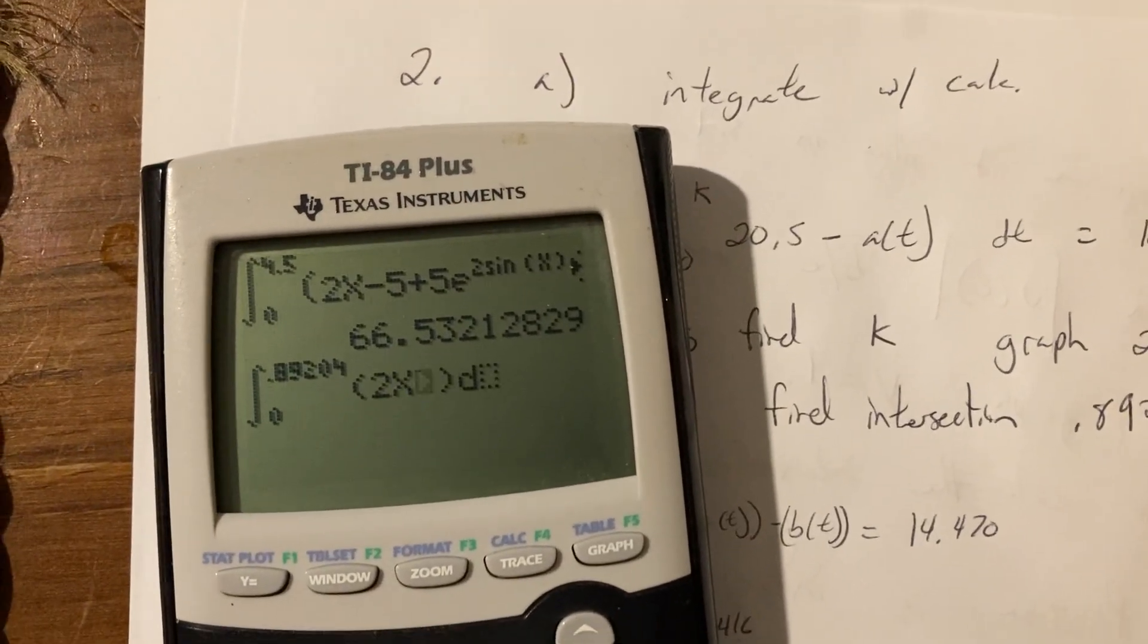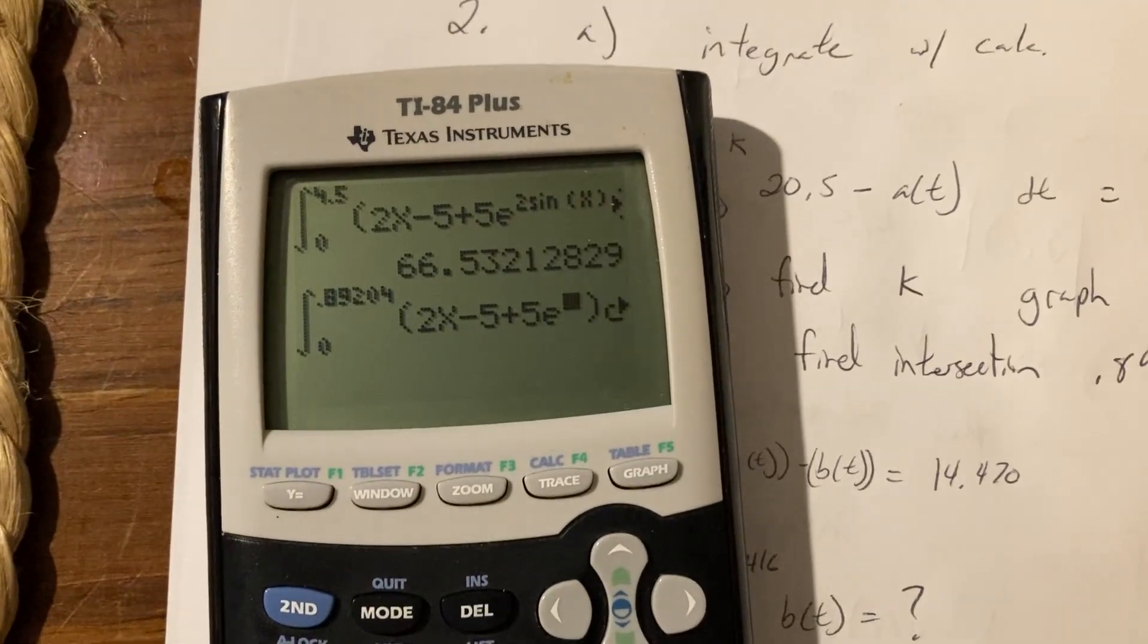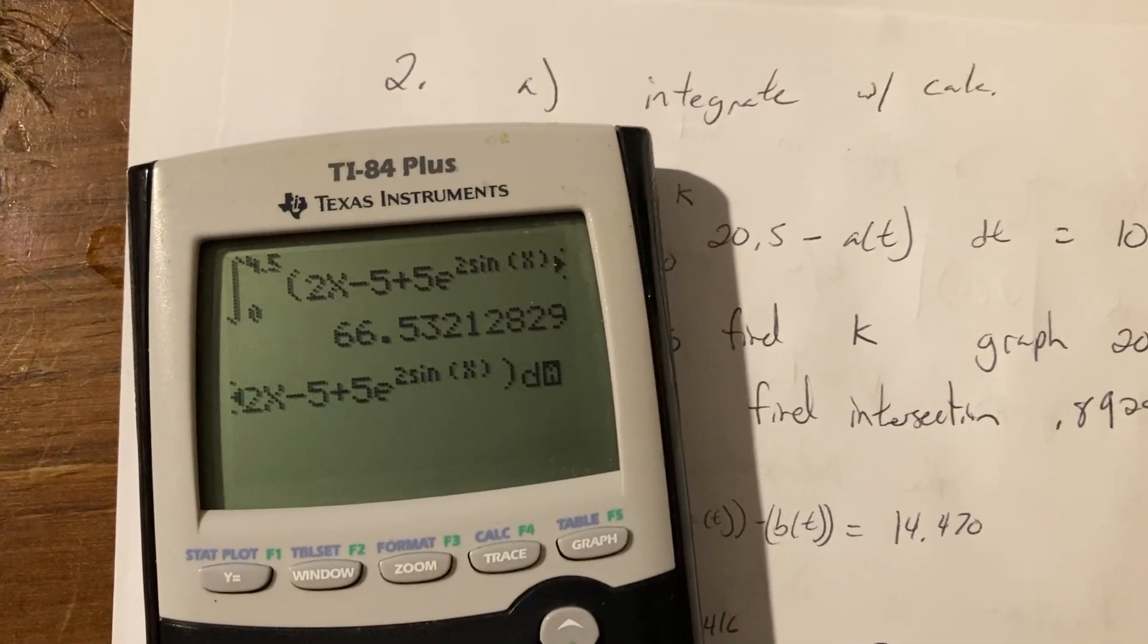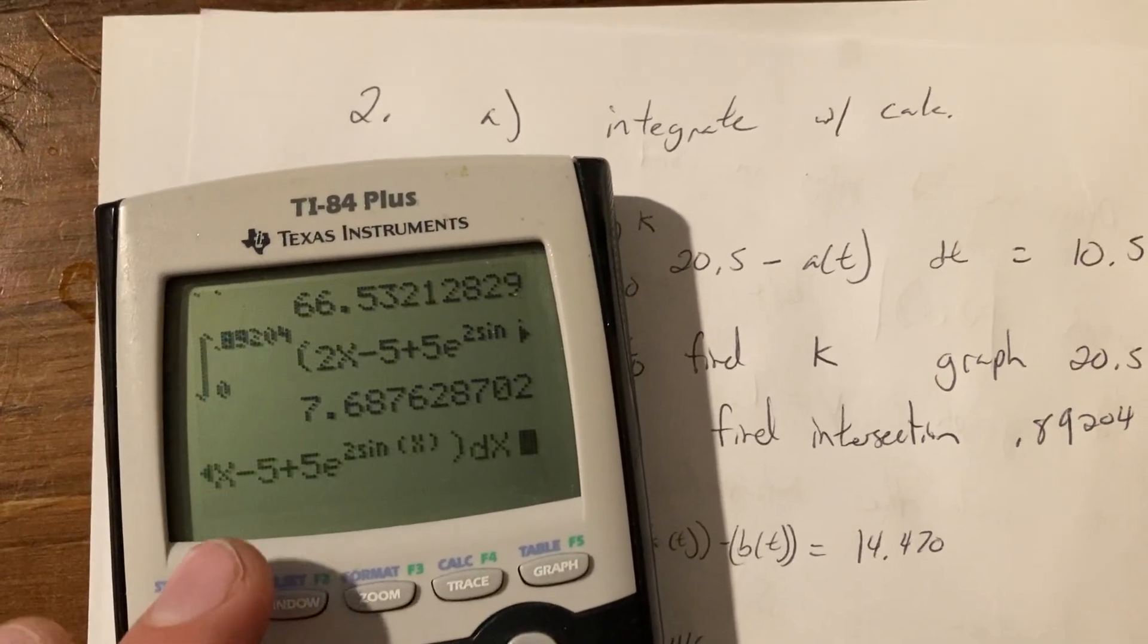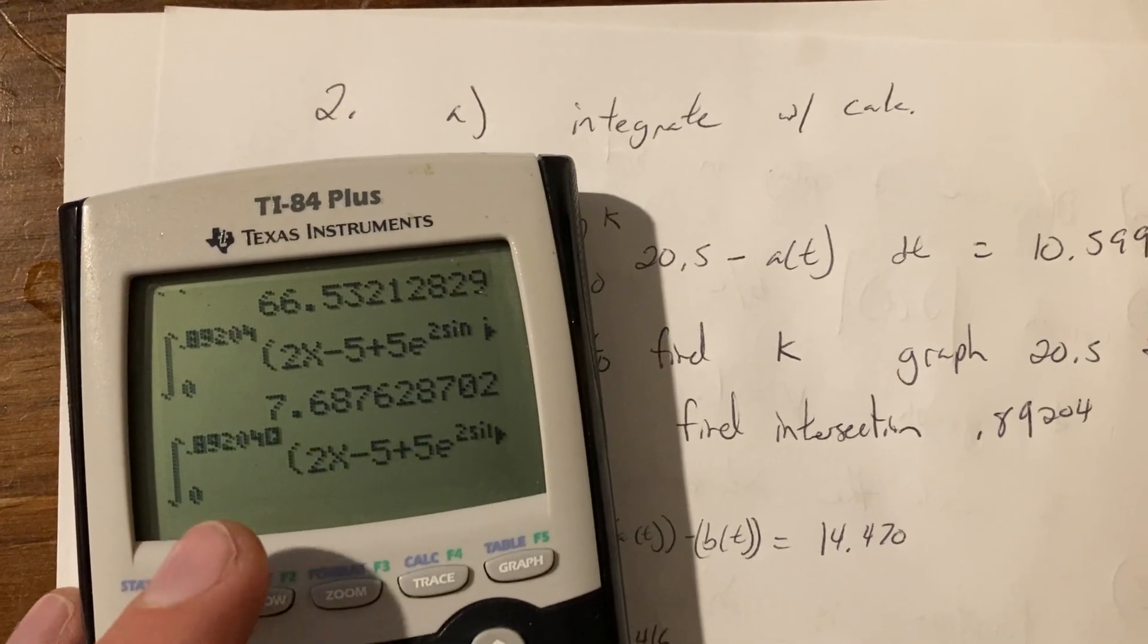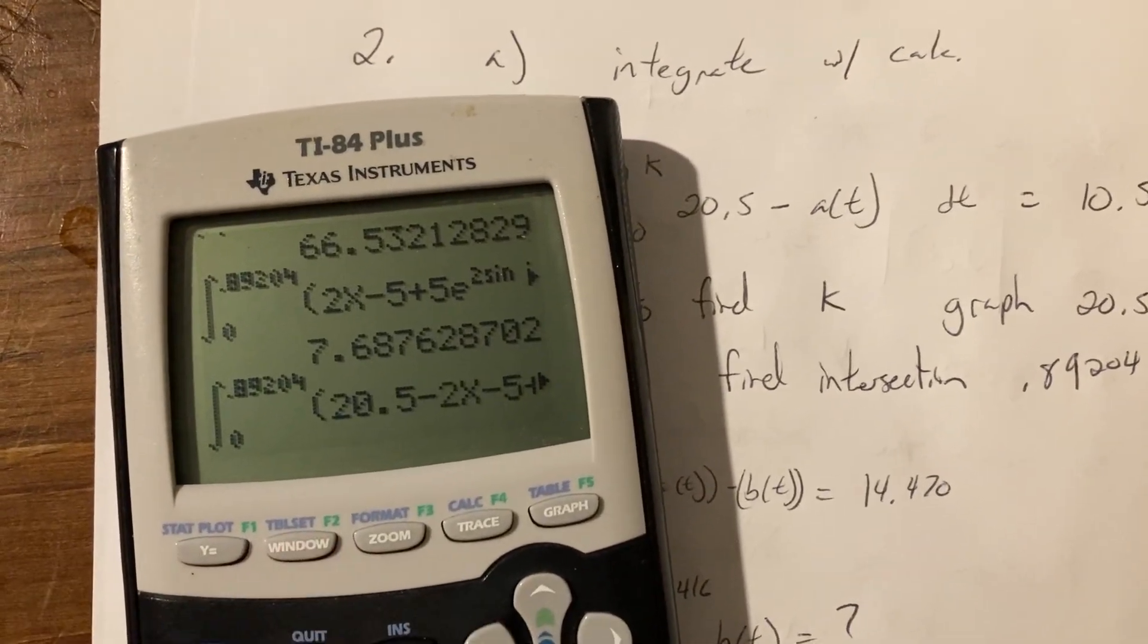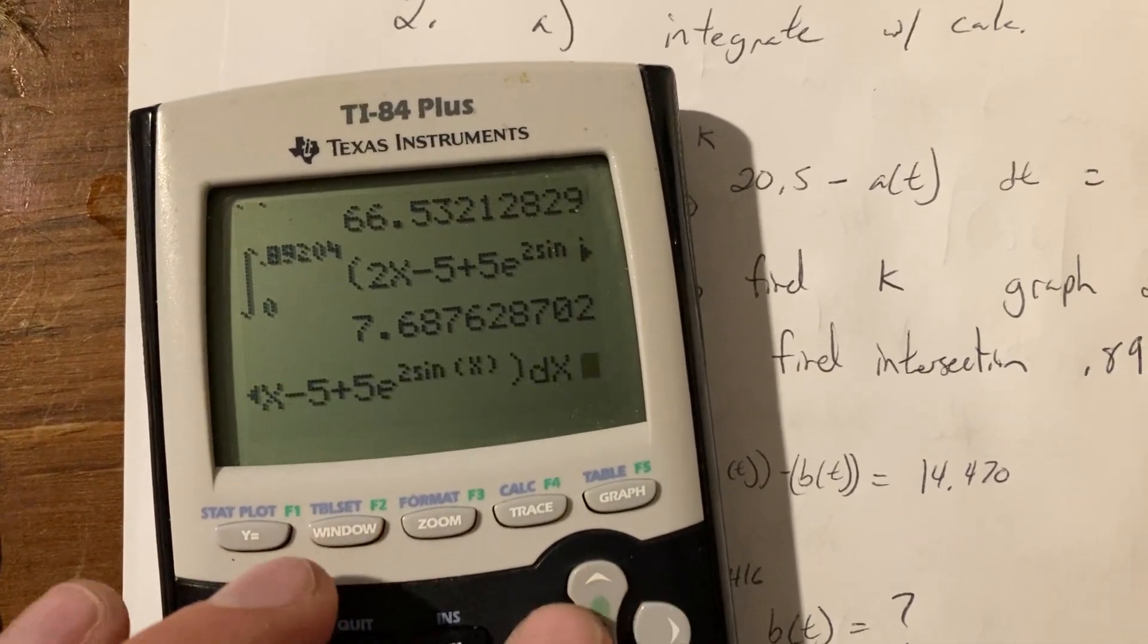Right now let's just do this, here it is, 2x minus 5 plus 5, second, natural log of e to the 2 sine x, close those parentheses dx. Oops, that's good, but I forgot to put in the 20.5 minus, so insert 20.5 minus.